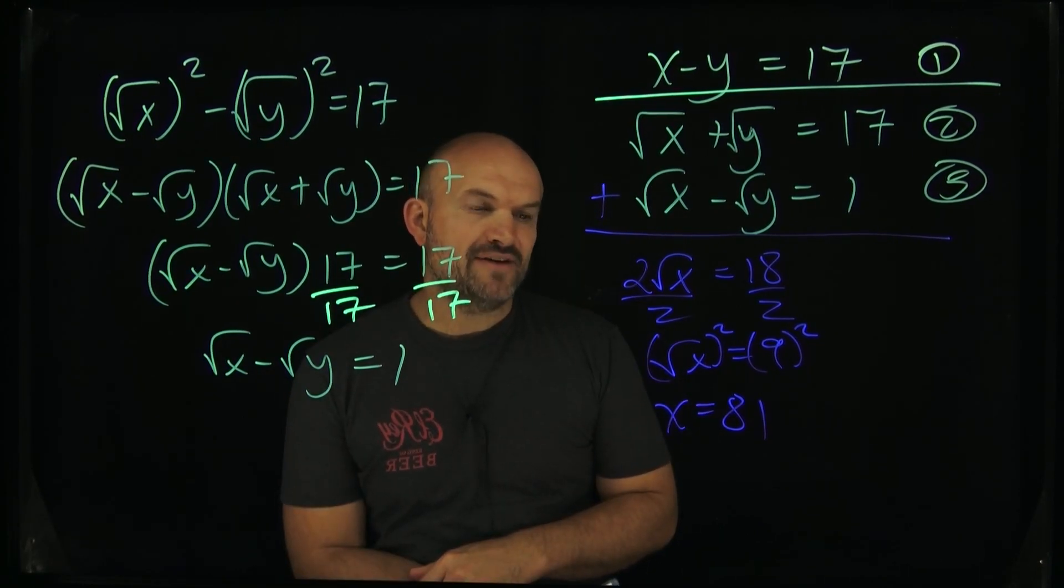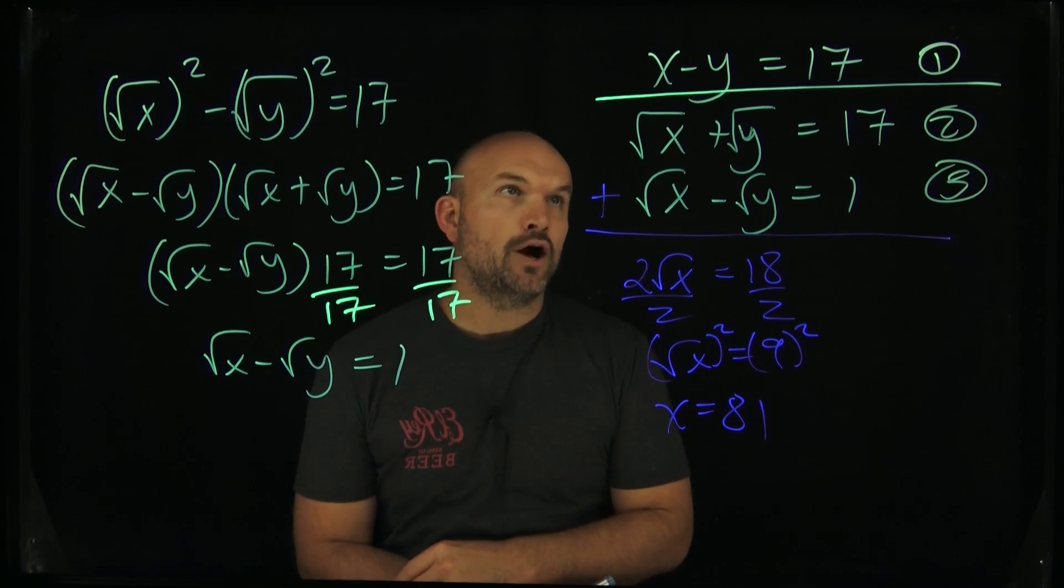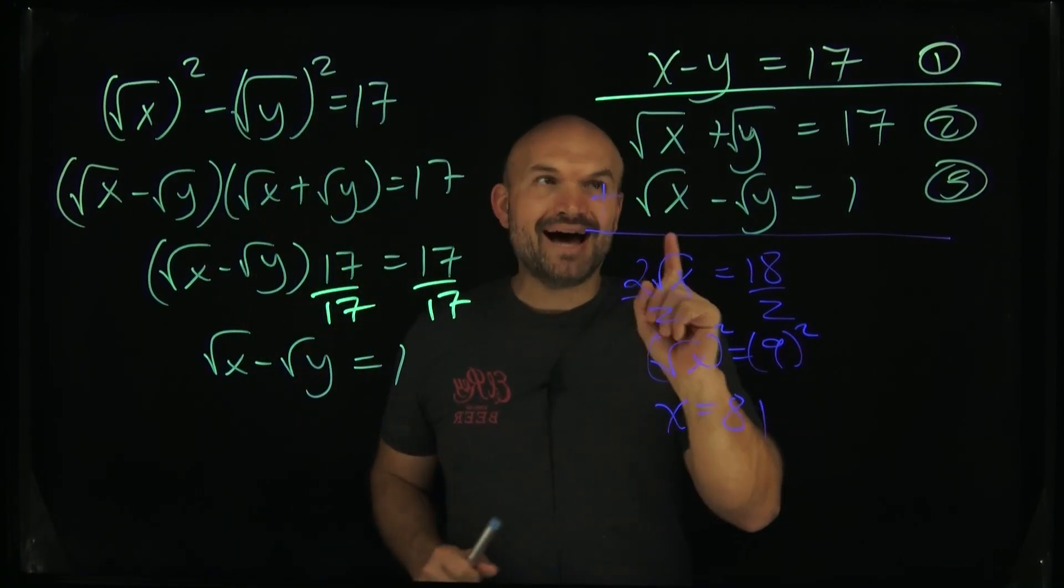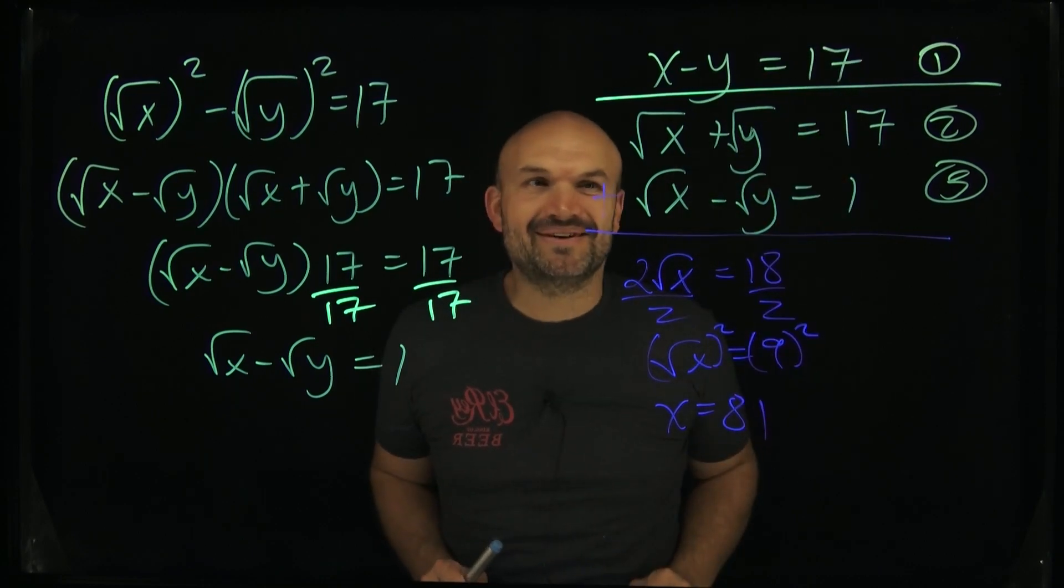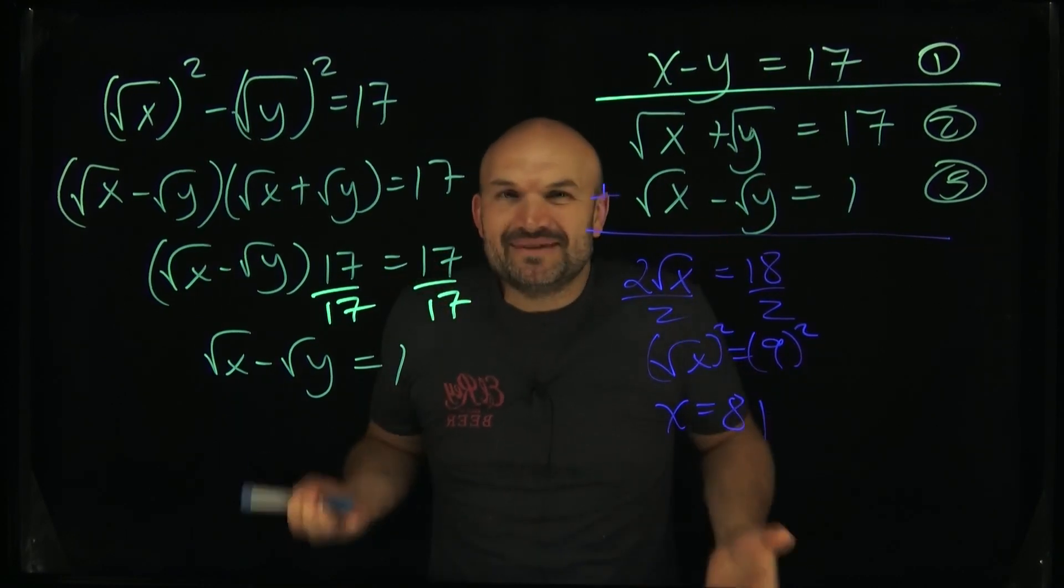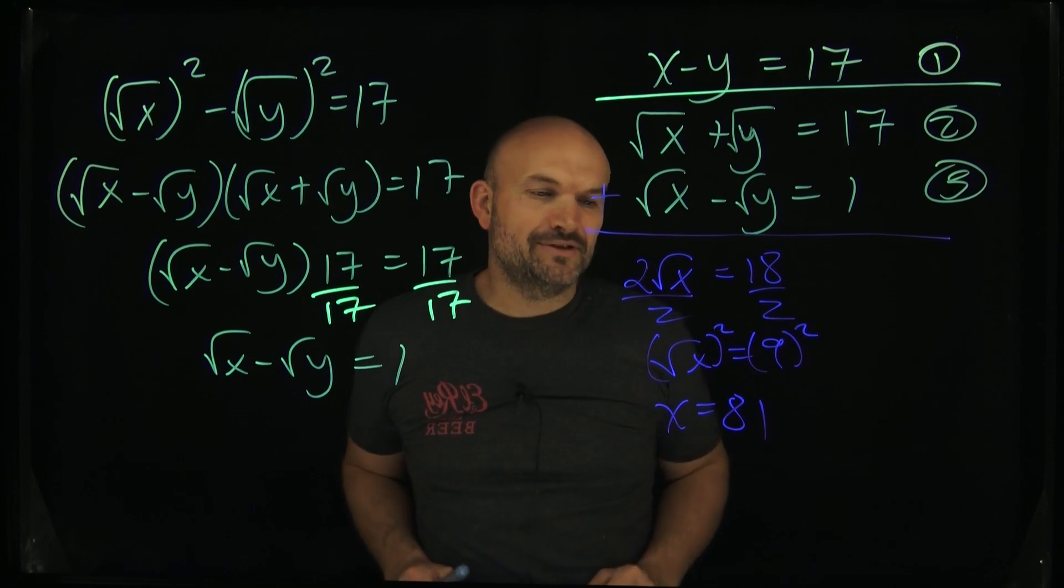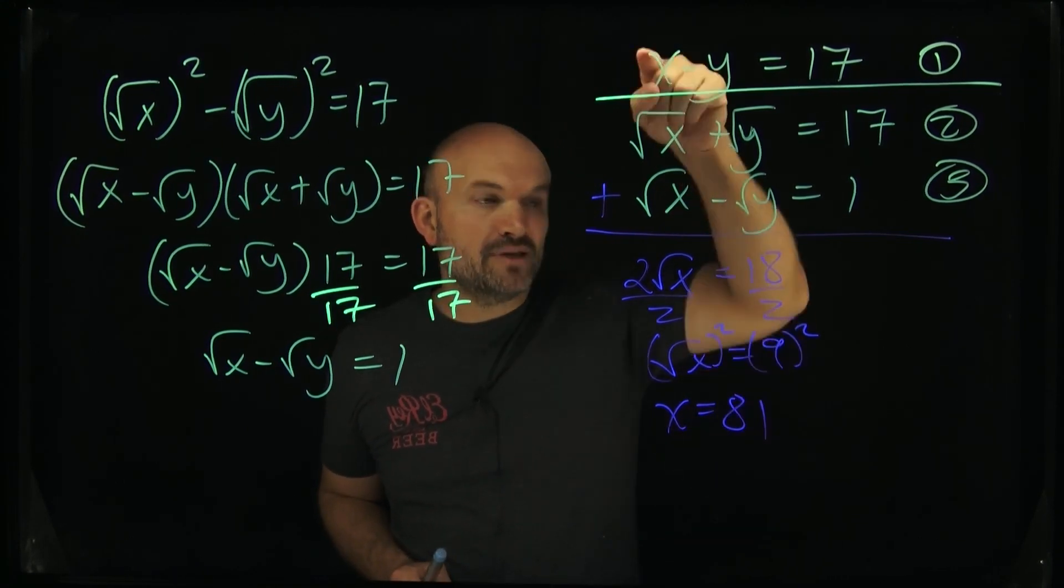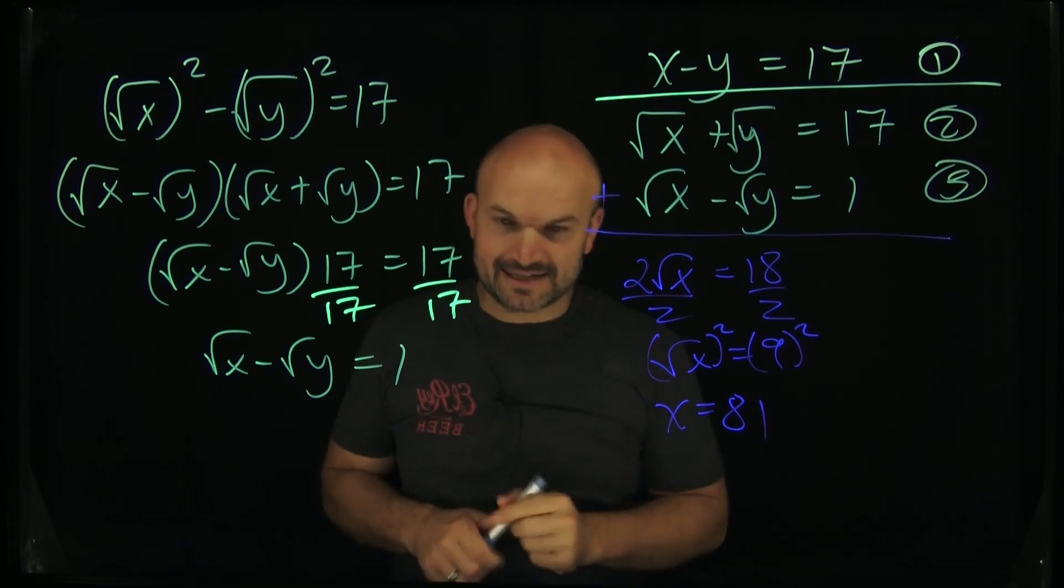Well what happens then if we want to find our y value? We don't have anything solved for x, but the nice thing is going back to that original equation, I don't really want to deal with the square roots. So what I'm going to do is take 81 and plug it back into this equation to solve for y.